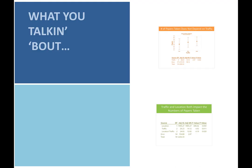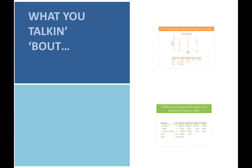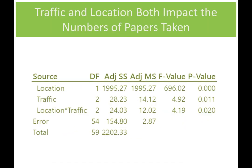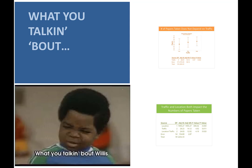Wait a minute — what? When we first did the analysis, we saw that the number of papers taken does not depend on traffic: low, medium, or high. Now, when we run it, all we do is add a second factor and this new strange interaction term, and the traffic level does seem to be a significant factor. Nobody said it better than Arnold from Diff'rent Strokes: 'What you talking about, Willis?' How is this possible?